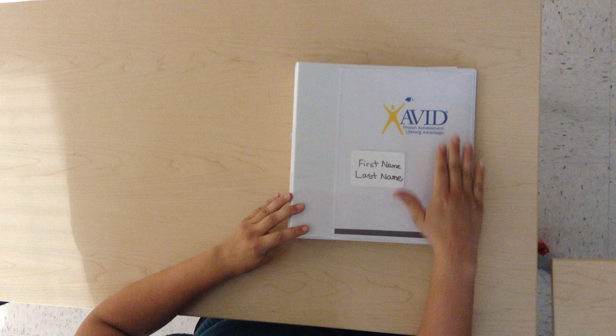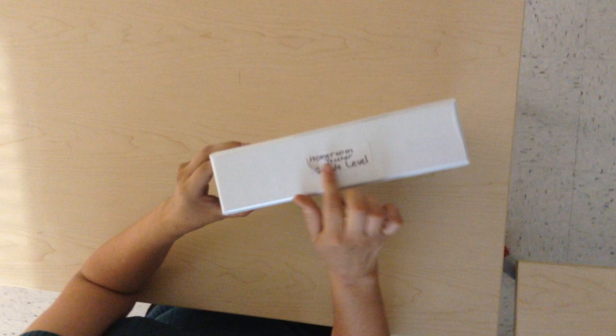On the cover of your AVID binder, you will get an AVID sheet. You will label the front with your first and last name. You will label the side of your binder with your homeroom teacher's name and your grade level.